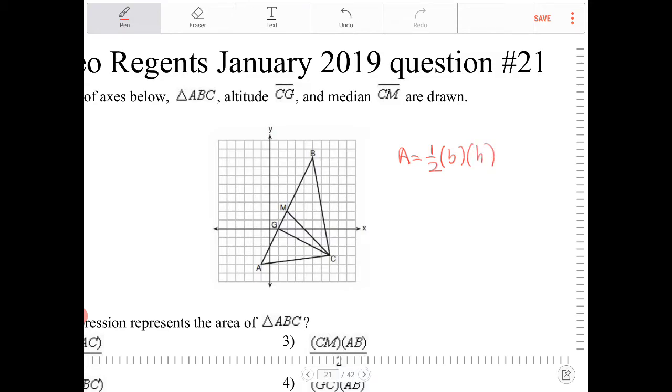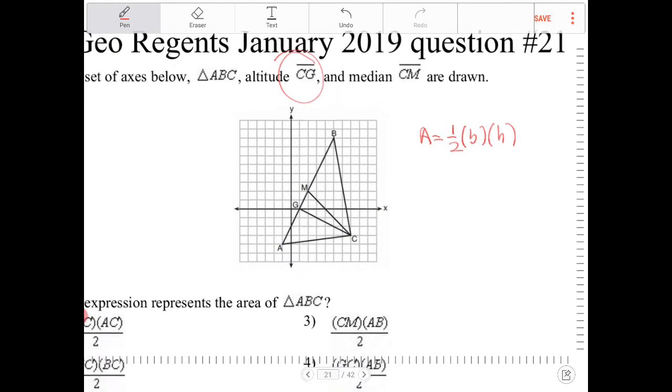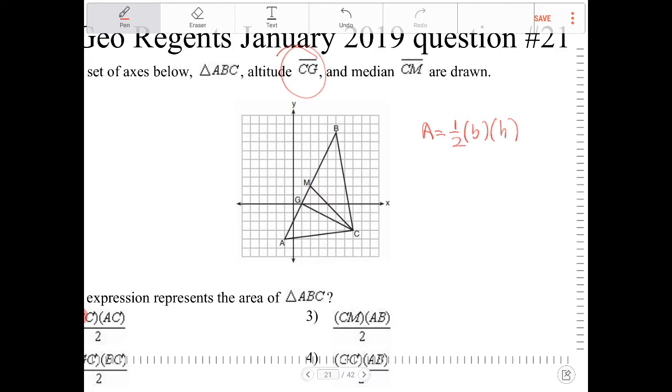In order for us to find the area of the triangle, we're going to use the altitude, so that's CG. And the base of the triangle is the line segment that the altitude is perpendicular with.